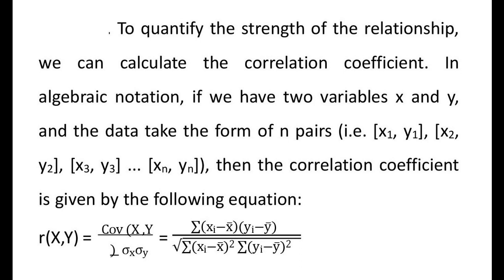Covariance is a measure of how much two random variables vary together. It is similar to variance, but where variance tells you how a single variable varies, covariance tells you how two variables vary together. Here, x̄ is the mean of the x values, ȳ is the mean of the y values, and σx and σy are the standard deviations of x and y respectively.